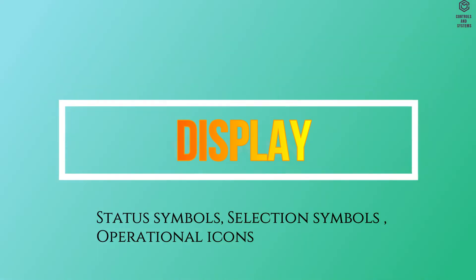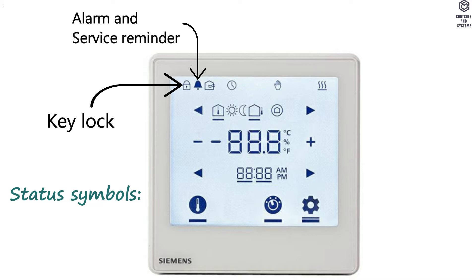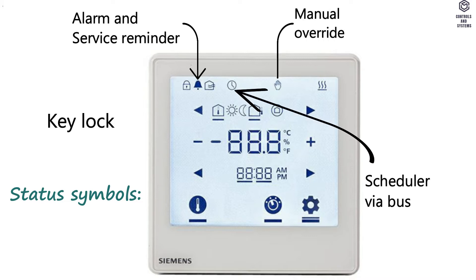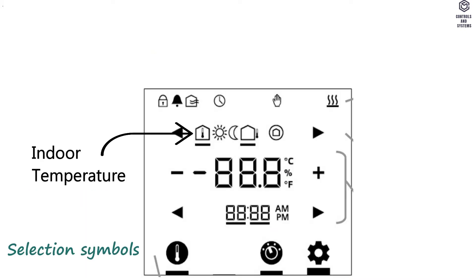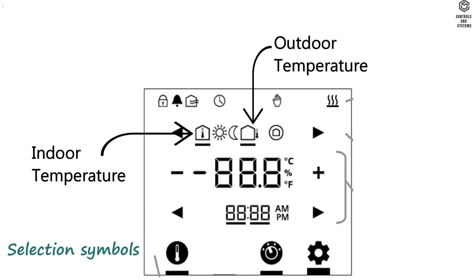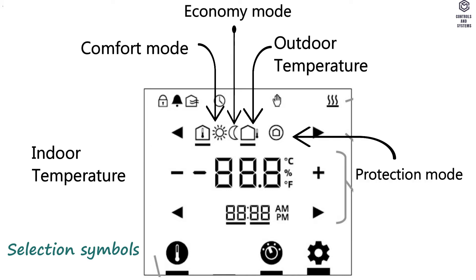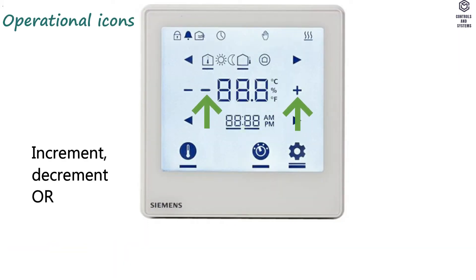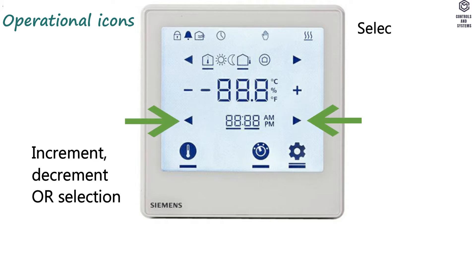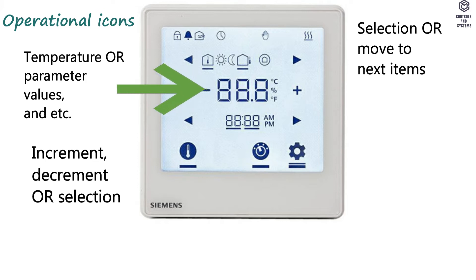Display status symbols: key lock, alarm and service reminder, scheduler via bus, manual override, heating active, selection symbols, indoor temperature, outdoor temperature, comfort mode, economy mode, protection mode. Operational icons: increment, decrement or selection, selection or move to next items, temperature or parameter values, and more.